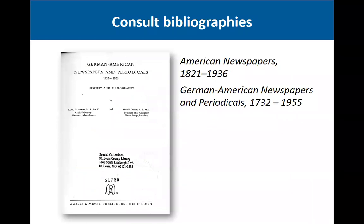There are some bibliographies in print for newspapers. One is called American Newspapers 1821 to 1936, and the other, more specific to our subject, is German American Newspapers and Periodicals 1732 to 1955. Both publications list the repositories that own or hold those titles. These books are dated, but usually that information will still be valid.